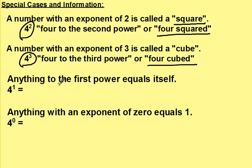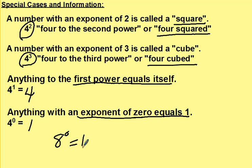Now this is interesting. Anything to the first power equals itself. So 4 to the first power would be 4. 8 to the first power would be 8. 10 to the first power would be 10. Anything with an exponent of 0 equals 1. So 4 to the 0 power is 1. 8 to the 0 power would be 1. 10 to the 0 power would be 1.